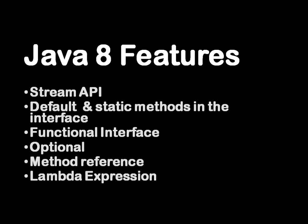The first question: what are the features that got introduced in Java 8? You can list down all the features. When I answer, I specifically mention those features I have worked on. I would say: streams, default and static methods, lambda expressions, functional interfaces, optional class, and method references. Apart from this, there were a few other enhancements on the JDK, HashMap, and the DateTime API.